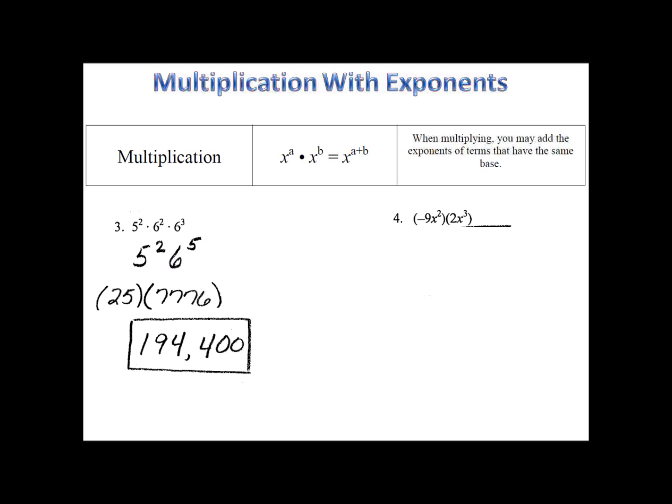My favorite example so far is number four. We have negative 9x squared times 2x to the third. We'll multiply the negative 9 and the 2, and then we'll multiply the x's. Negative 9 times 2 is negative 18. x squared, x to the third, 2 plus 3, x to the fifth. So the product is negative 18x to the fifth.